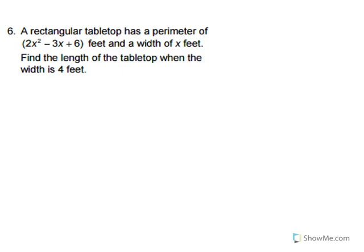Number 6, a rectangular tabletop has a perimeter of 2x squared minus 3x plus 6 feet and a width of x feet. Find the length of the tabletop when the width is 4 feet.